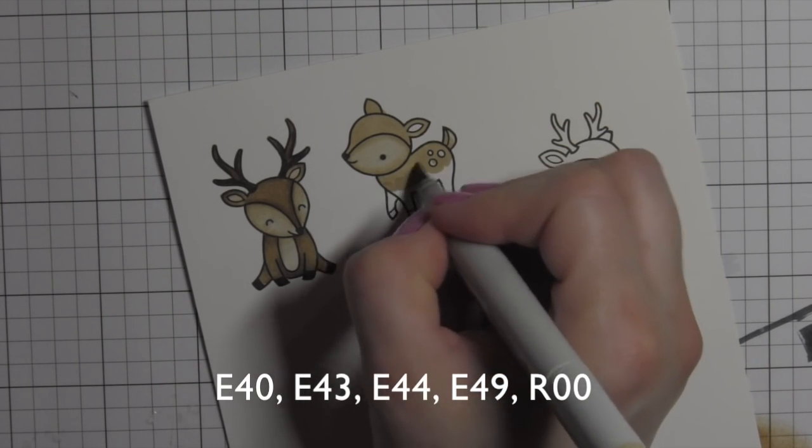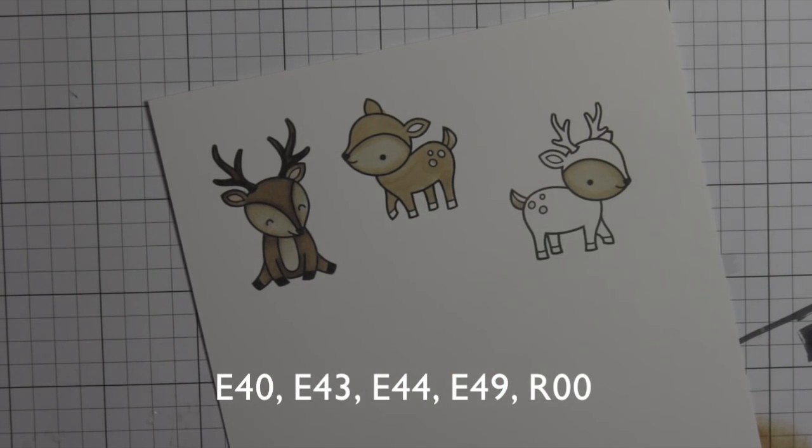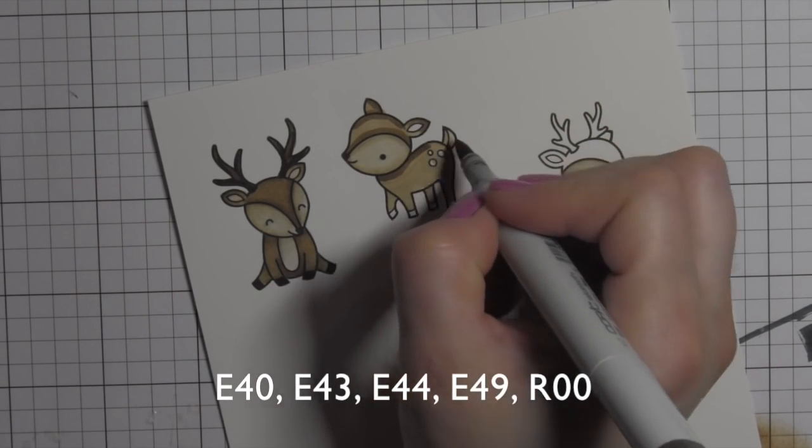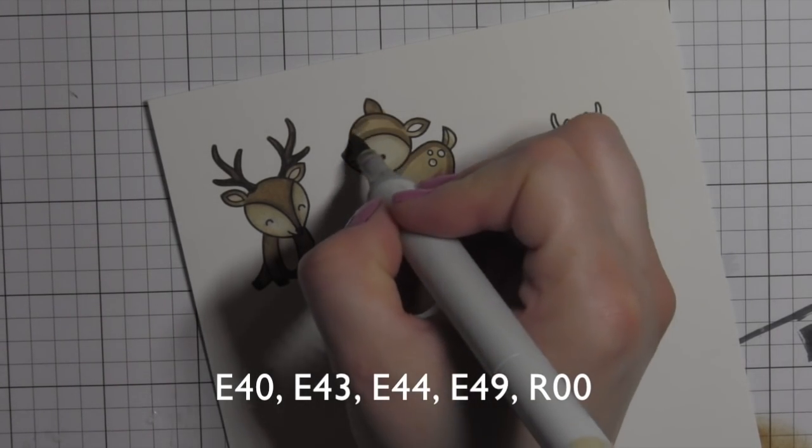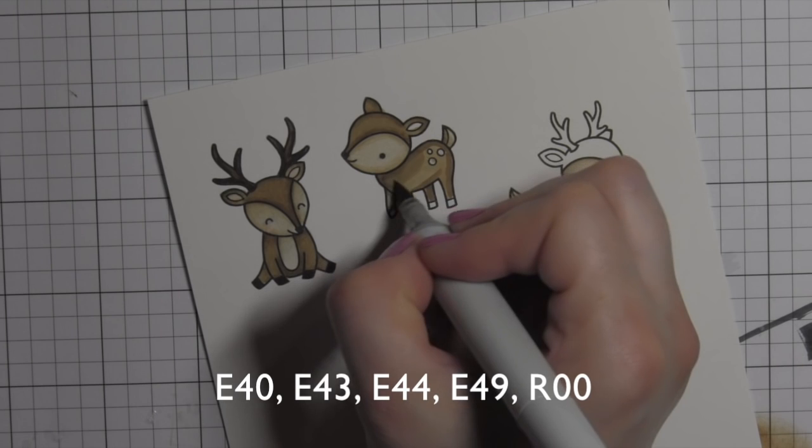So the lighter areas on the deer, which are the face and the underside of the tail, are going to be E40 and E43. The main area of the body on the deer is E43 and E44.